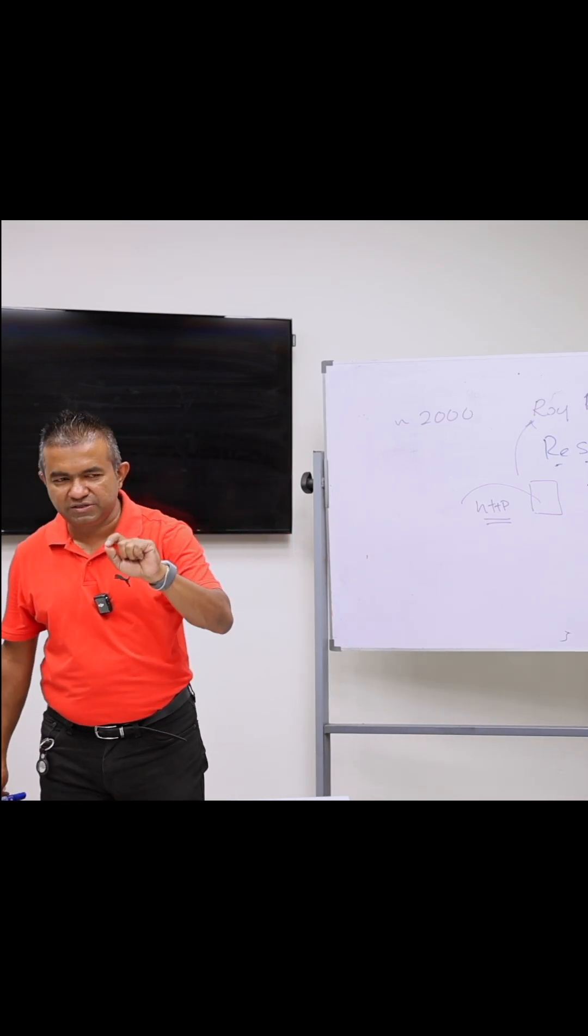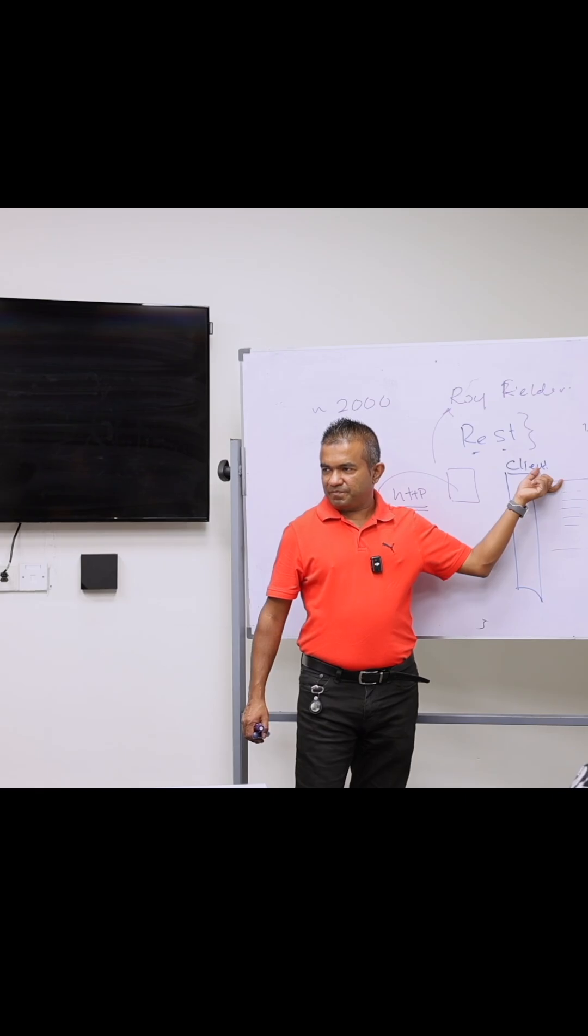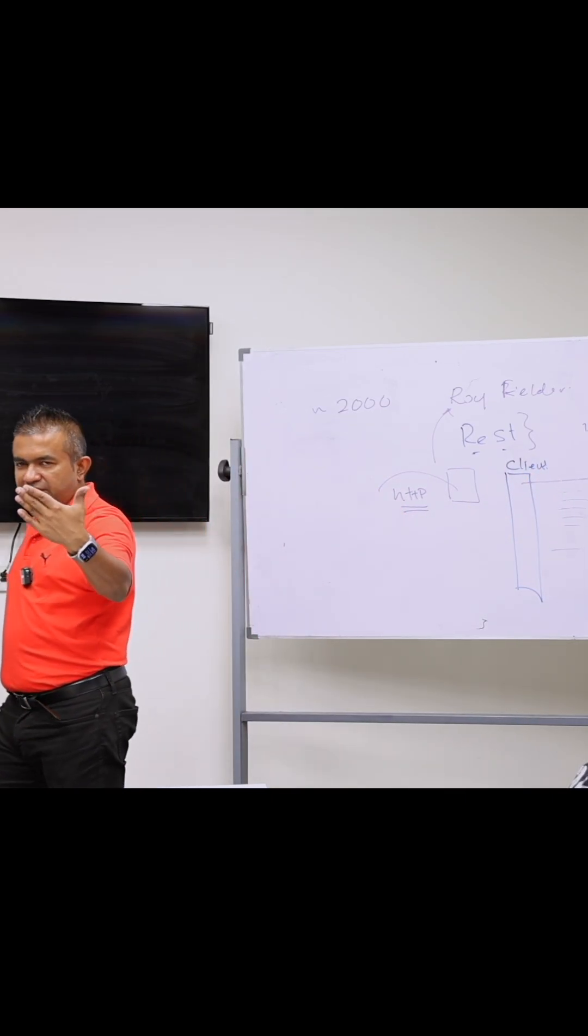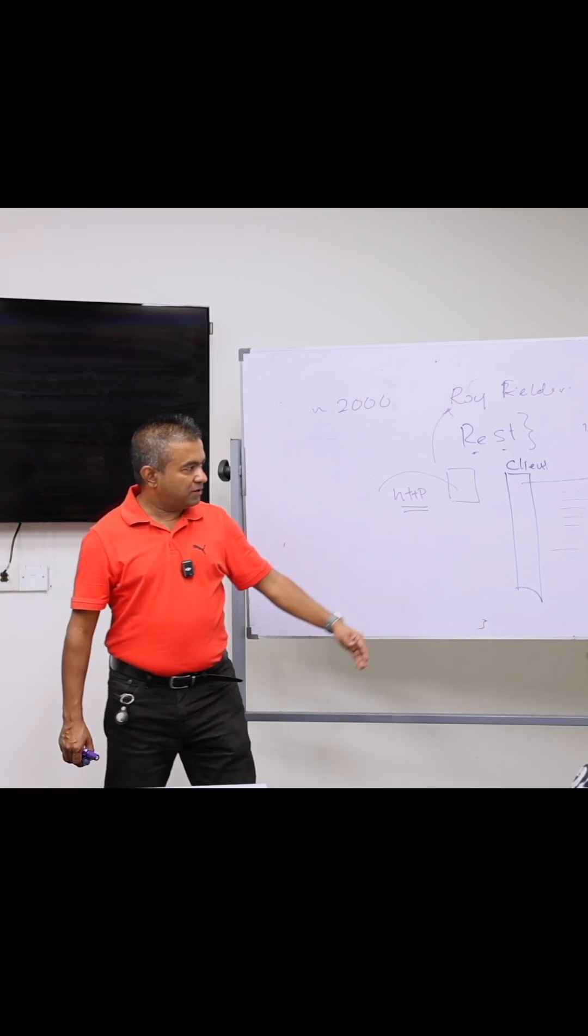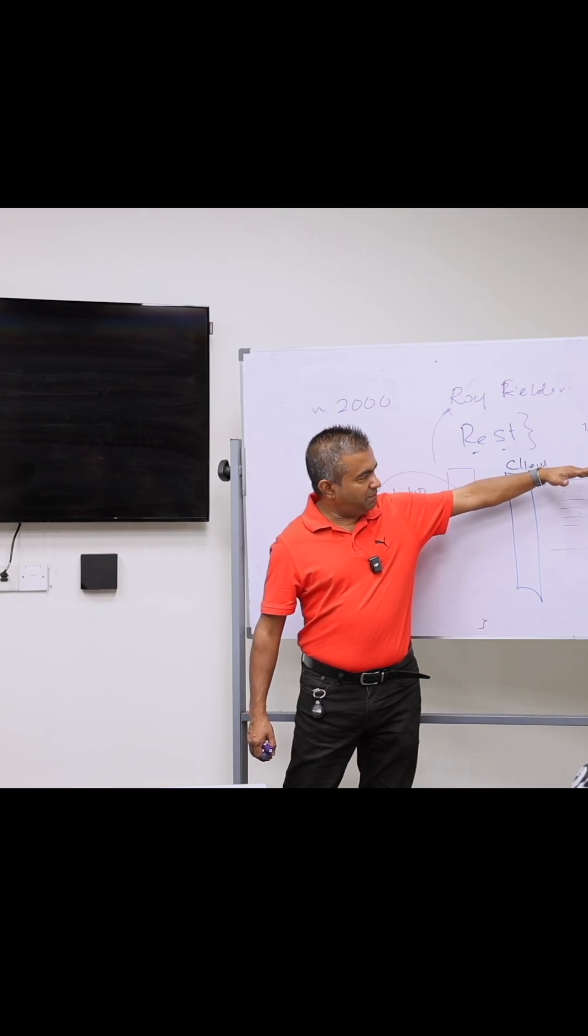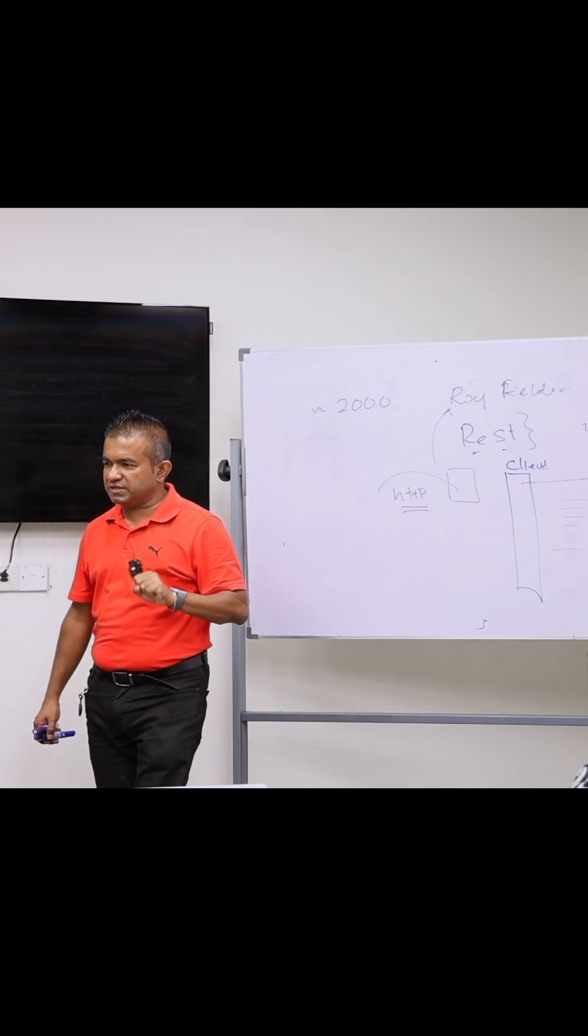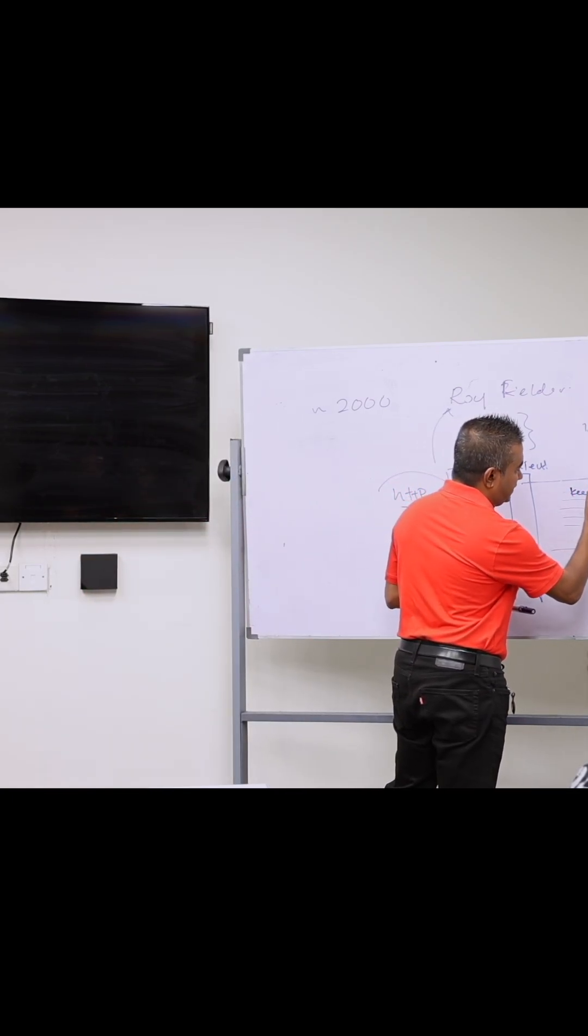Each time you send the message, you open a connection. If opening a connection takes 10 milliseconds, then when you send 100 requests, it takes 1000 milliseconds which is one second, one second delay. To avoid that, HTTP 1.1 what they did, they made it so you open the connection and then you can send the messages, then you close the connection later on. For that, we are using some special header called keepalive.